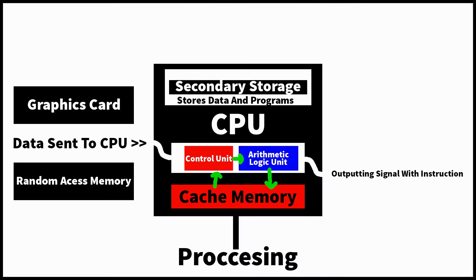How does the central processing unit, or what we call the CPU, work? Basically, the CPU inputs data and outputs it as a signal telling each individual component on your computer what to do, such as your RAM or graphics card.